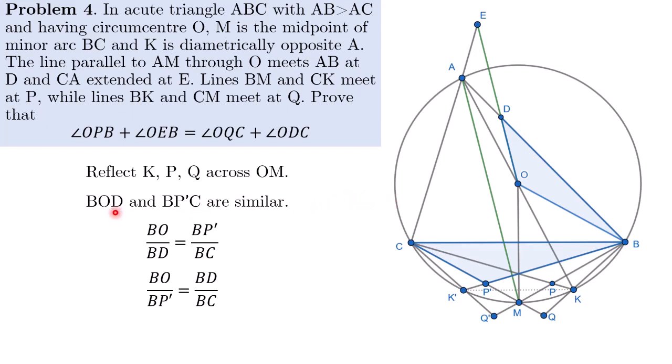Now that we have shown that the two triangles are similar, we can write down the ratio that this implies. So BO over BD is equal to BP' over BC. And I'm just going to rearrange it a bit by moving the terms across. So I have BO over BP' equals BD over BC.